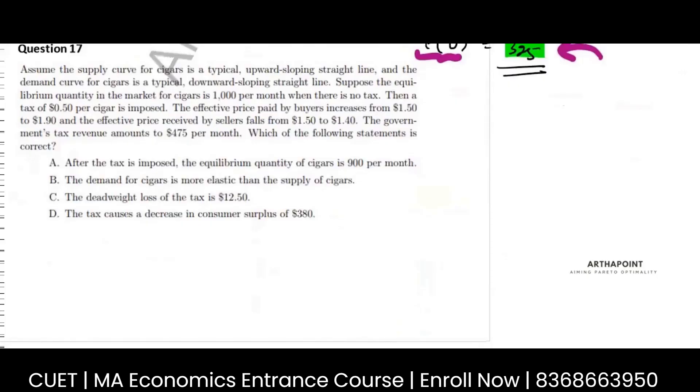I assume the supply curve for cigars is a typical upward-sloping straight line and demand is a typical downward-sloping curve. Suppose the equilibrium quantity is a thousand per month when there is no tax. So keep plotting it - this is your supply curve.